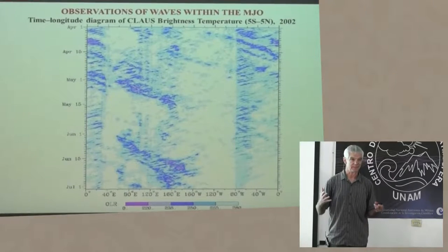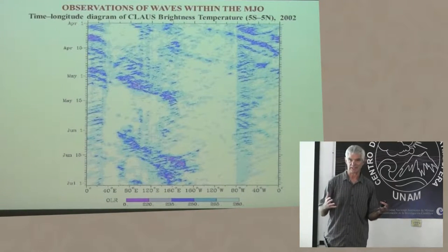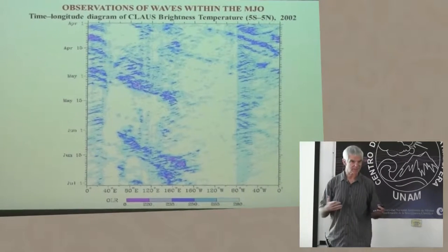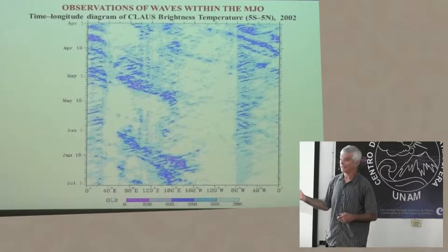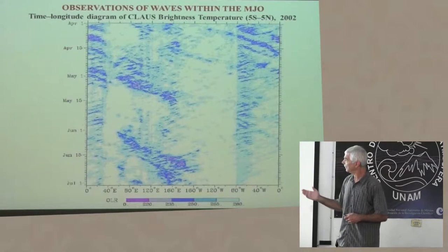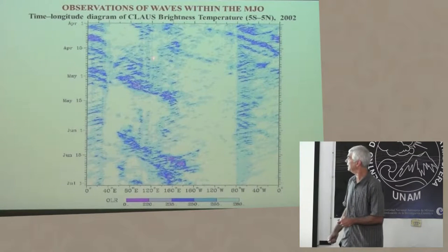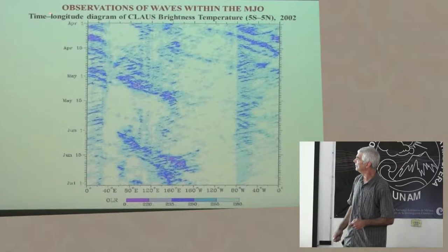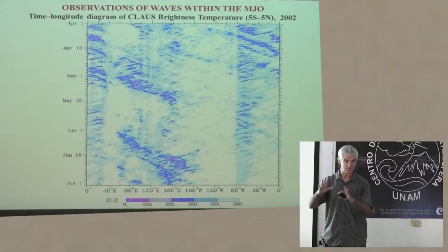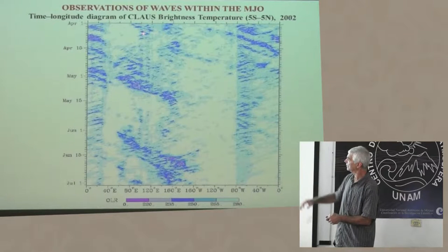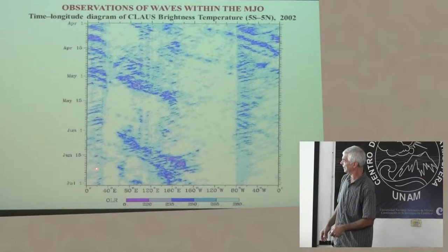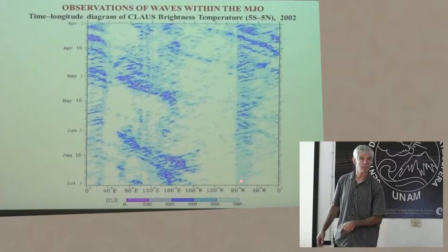In that animation, at some level it looked fairly chaotic. Yesterday it was even brought up that a lot of the convection in the tropics is stochastic and tends to be chaotic. But I'm going to argue that this convection is actually fairly well organized. An easy way to look at this is to make a time-longitude diagram by averaging that brightness temperature from 5°S to 5°N — an equatorial strip — for three months in 2002, going around the globe.